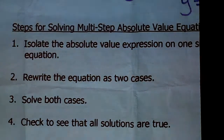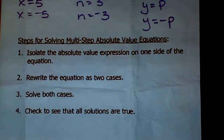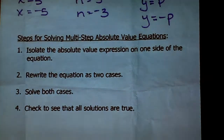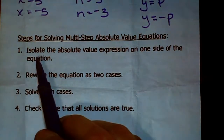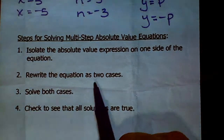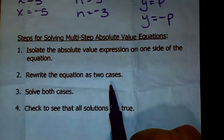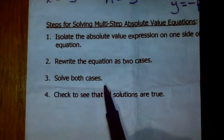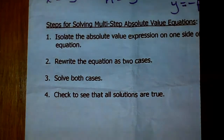I'm going to give you equations that are a little more complicated. I wanted you to understand why you can have two solutions — because with absolute value, there are two numbers that are the same distance away from zero. Steps for solving multi-step absolute value equations: Step 1, isolate the absolute value expression on one side. Step 2, rewrite as two cases — the positive and negative version. Step 3, solve both cases and check your answers.